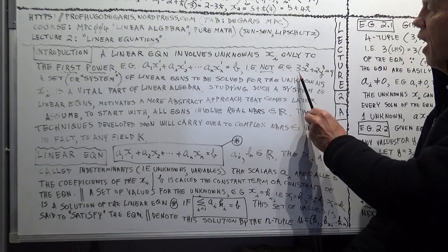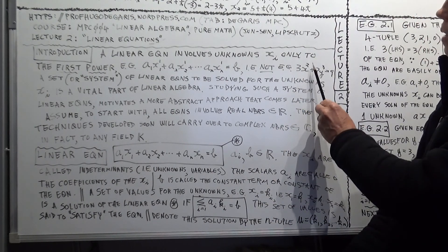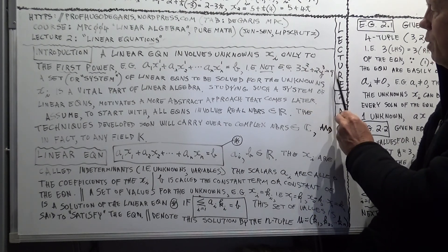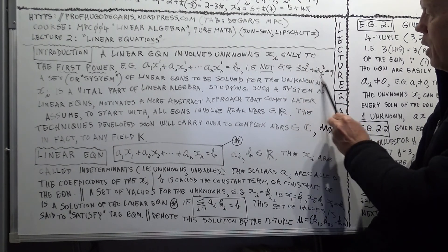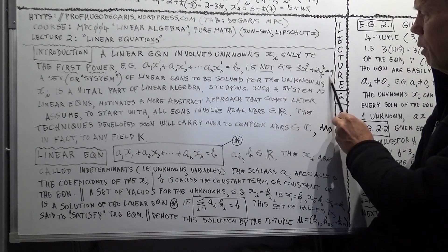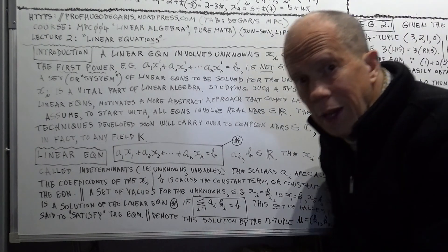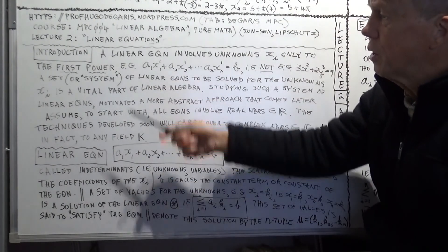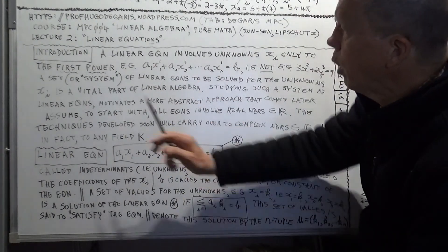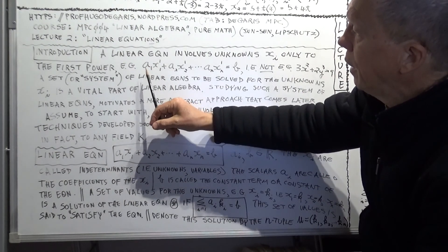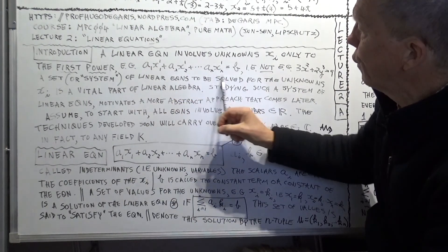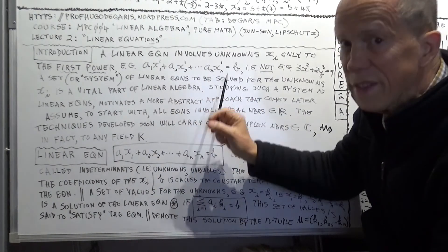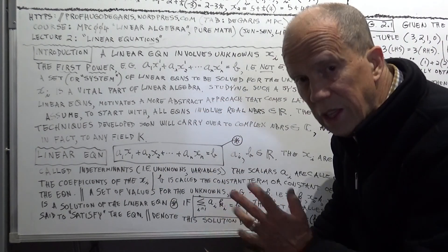Here's an example of a non-linear equation. The powers are not one — you've got X squared and Y cubed and so forth. That's an example of a non-linear equation. For this chapter we'll be dealing with equations of the linear form, where all the powers of the unknowns are ones.